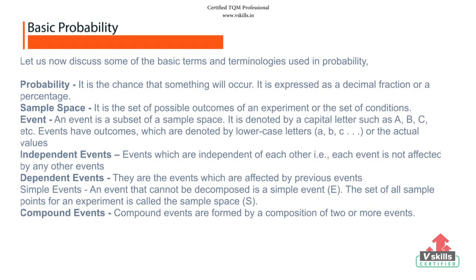Let's now discuss some of the basic terms and terminologies used in probability. Probability is the chance that something will occur, expressed as a decimal fraction or a percentage. Sample space is the set of possible outcomes of an experiment or the set of conditions. An event is a subset of a sample space, denoted by capital letters such as A, B, C. Events have outcomes which are denoted by lower case letters. Independent events are independent of each other. Dependent events are affected by previous events. A simple event is an event that cannot be decomposed. Compound events are formed by a composition of two or more events.